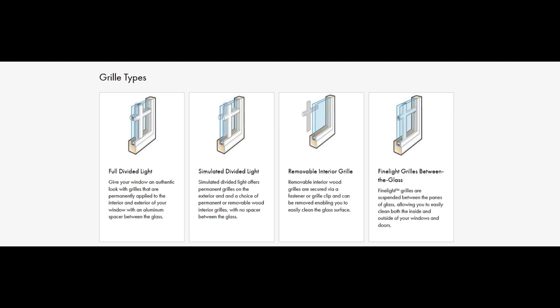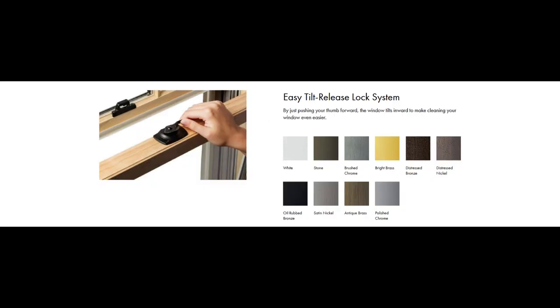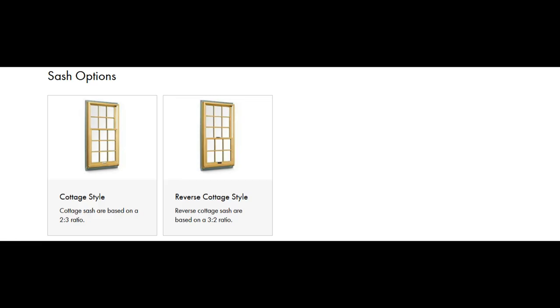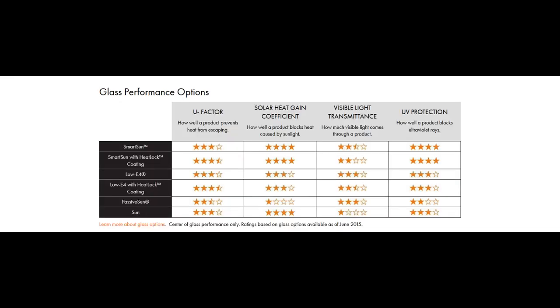There's different colors you can get for the lock system. The grill patterns, you can choose from a bunch of those. There's different sash options, different glass performance for UV protection and energy efficiency.